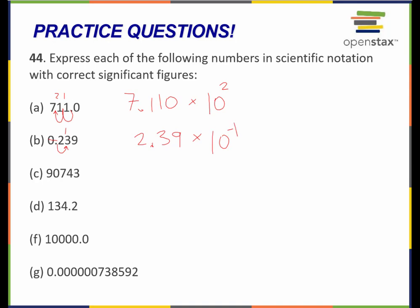Let's do the next one. This is an ambiguous number that doesn't have a decimal point drawn, but I would assume that it's over here. So I'm going to move it 4 spots to the right. All of these digits are significant — this zero is an interior zero, it's in between two numbers that are significant, so it itself is significant. So all five of these digits are significant: 9.0743. I've moved the decimal in between the first two numbers — I had to move it over 4 spots to the left — so times 10 to the positive 4.